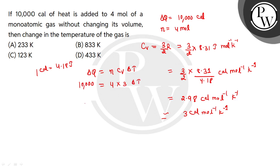So here we will find delta T by doing 10,000 divided by 12. You will solve it and you will have 833.33 Kelvin. How much change in the temperature of the gas?